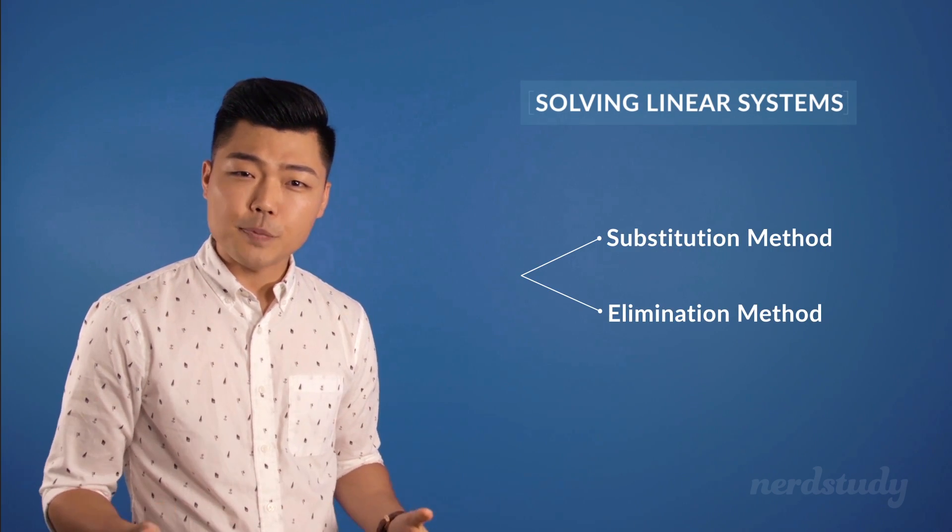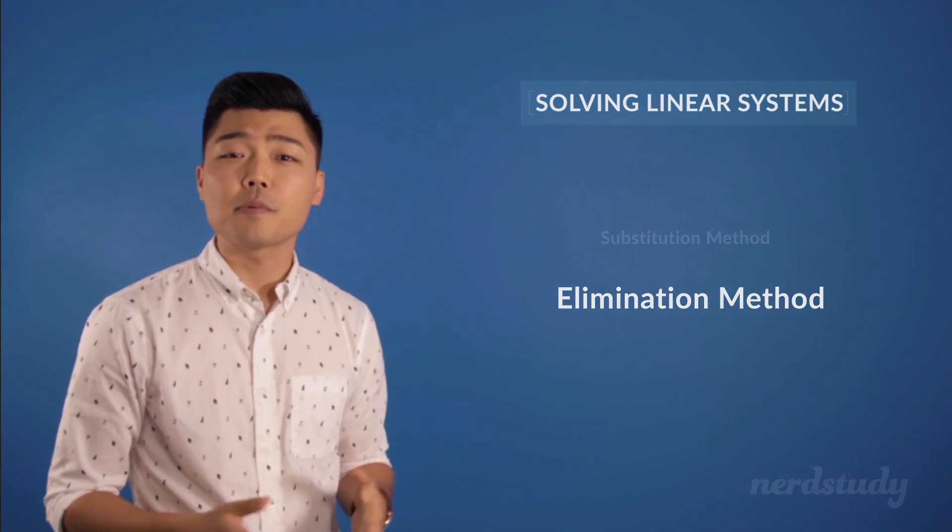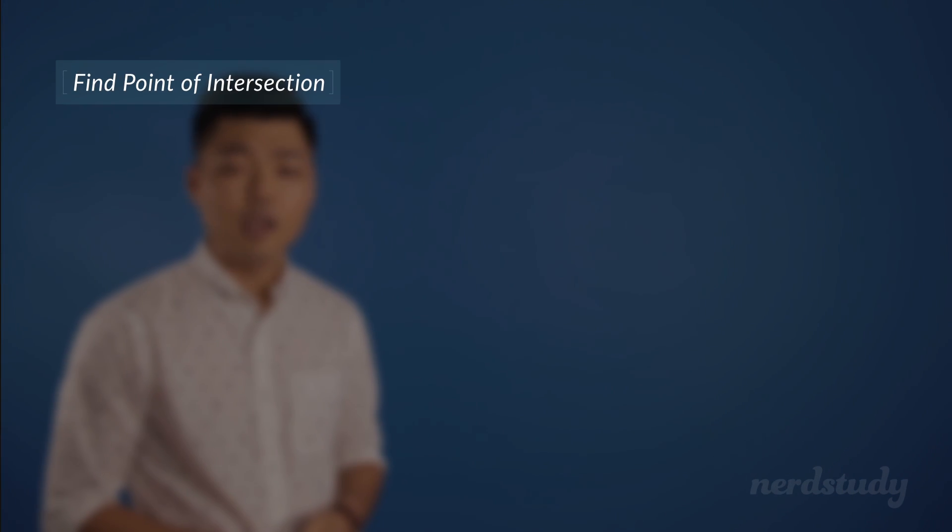The best way to explain this method is by doing some examples together. In this example we've got two equations. The idea of elimination is to add both equations together in order to eliminate one of the variables.